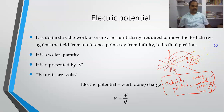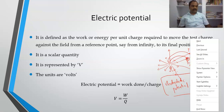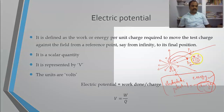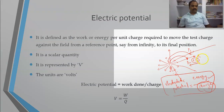If I am moving a unit charge from infinity to a particular point P, then it is called the electrostatic potential of that point. If I am moving from P1 to P2, then the energy required to move from P1 to P2 is called the potential difference between the points P1 and P2.